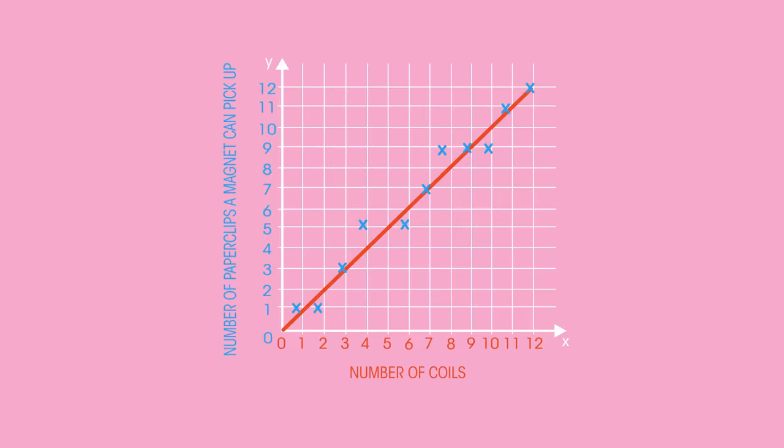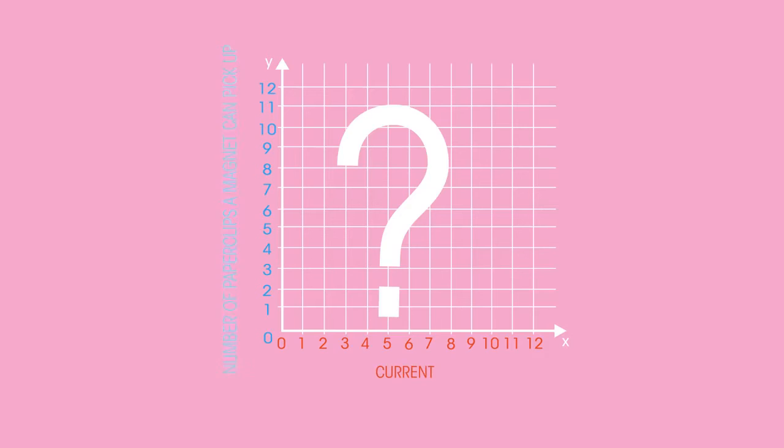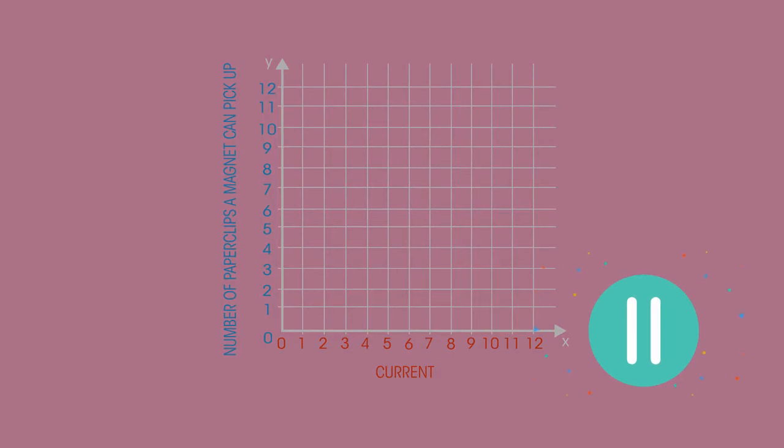So that graph has the number of coils on the x-axis. How do you think the graph would look if we instead had the current on the x-axis? What would the relationship be between the current and the number of paper clips? Pause the video and have a think.